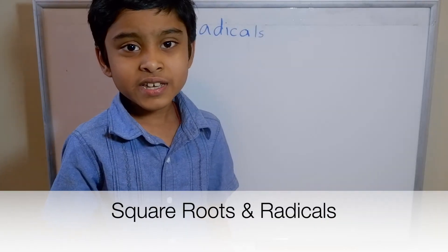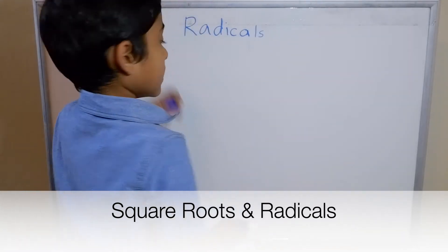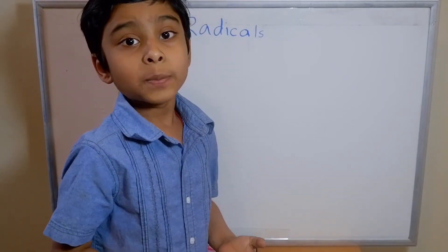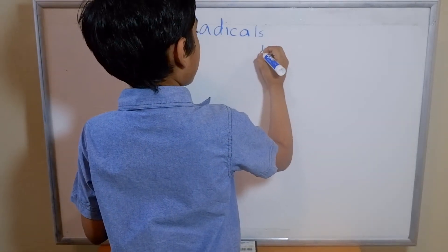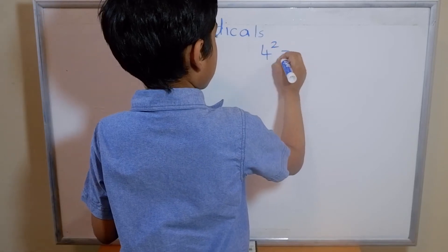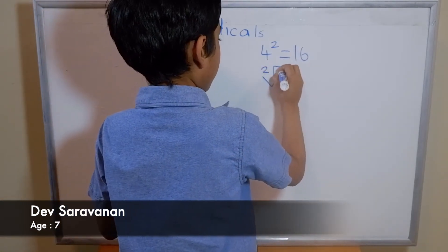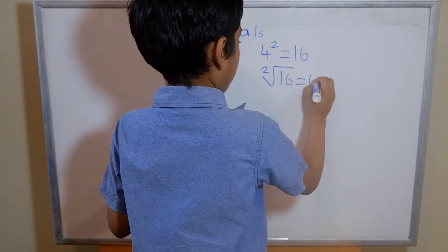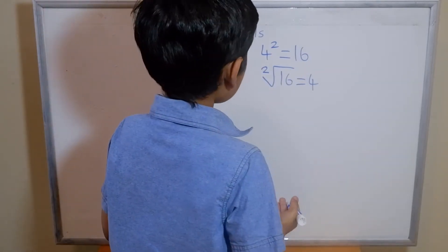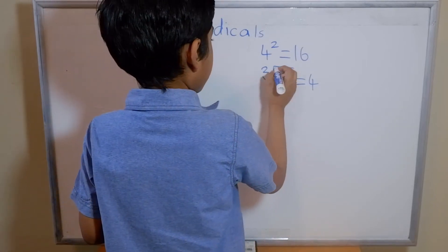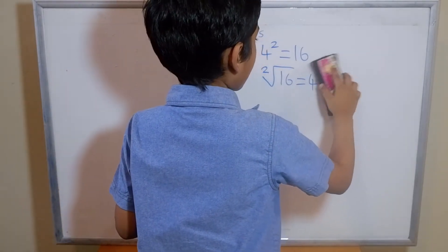Hi friends, today we're going to discuss radicals. Radicals are basically the opposite operation of applying exponents. For example, we know that four squared is 16, so if we wanted to find the square root of 16, this would equal 4. By default, the index two is not written in the square root symbol.